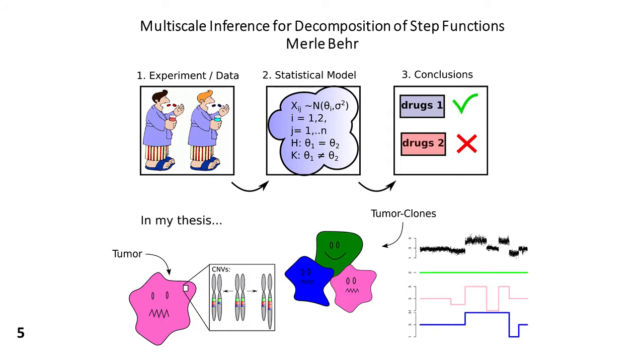Then comes step two. In step two, we try to approximate our experiment — the real world — with some very precise mathematics. So we build a statistical model of how we think this data arises. This is where the real work of a statistician starts, because now we can derive within this model precise mathematical conclusions. And these conclusions can then be transferred back to our experiment, and we can answer, for instance, that drug one is better than drug two.